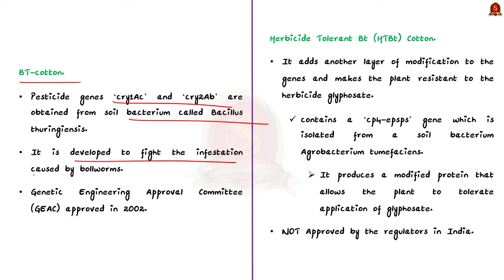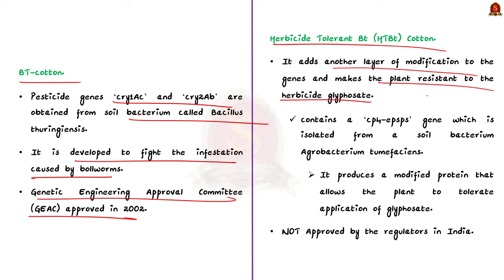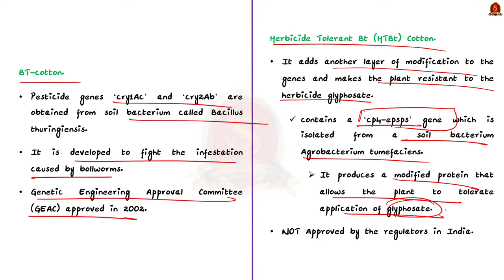Bt cotton is developed to fight the infestation caused by bollworms. The Genetic Engineering Approval Committee approved the release of Bt cotton for commercial cultivation in 2002 in the western and southern parts of India. There is also herbicide tolerant Bt cotton (HT Bt cotton), which adds another layer of modification making the plant resistant to the herbicide glyphosate. It contains the CP4 EPSPS gene isolated from the soil bacterium Agrobacterium tumefaciens, which produces a modified protein allowing the plant to tolerate glyphosate. Note that this variety has not been approved by regulators in India.